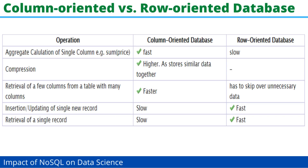Let us see the comparison of column-oriented versus row-oriented databases. For aggregate calculation of a single column, such as sum of price, column-oriented databases are very fast whereas row-oriented databases are slow. For compression, column-oriented databases are higher as they store similar data together, while this is not applicable in row-oriented databases. For retrieval of a few columns from a table with many columns, column-oriented is faster, while row-oriented has to skip over unnecessary data.